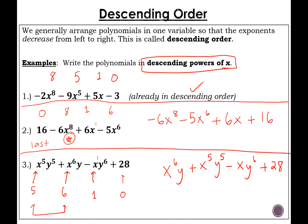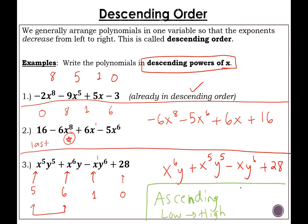Sometimes you might be asked for ascending order instead of descending — much less common, but it comes up in a couple of homework questions. It's just the opposite: instead of high to low, you do low to high. For example, 2x squared plus x to the seventh is ascending order because you have the lower exponent before the higher exponent. Usually we ask you to write in descending order, highest to lowest, but if you see the word ascending, it's just asking for the opposite.